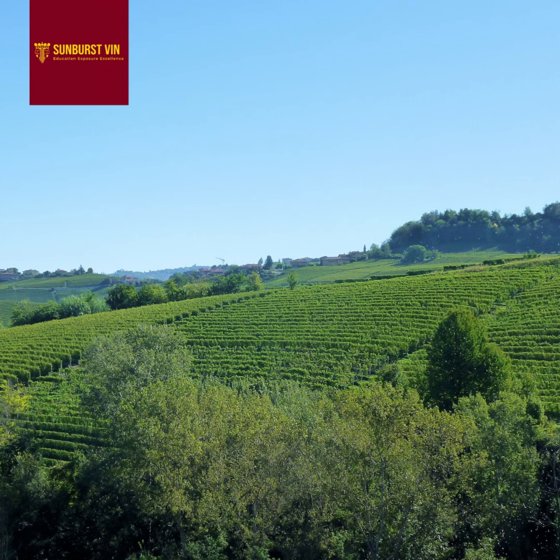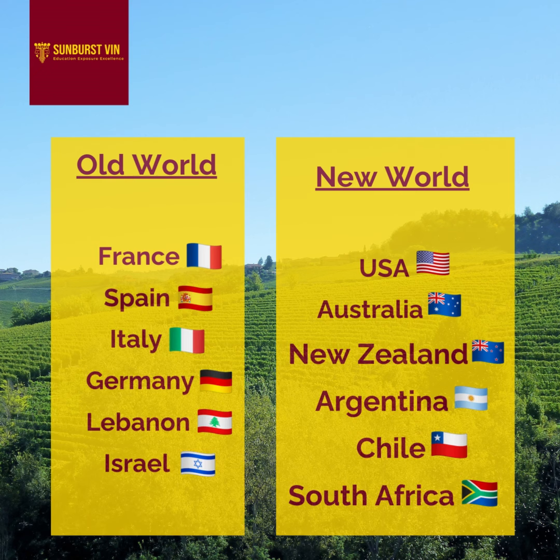Do you get confused between Old World and New World wines? The term Old World refers to countries where winemaking first developed. Countries such as France, Spain, Italy, Germany, Lebanon and Israel are called Old World countries.